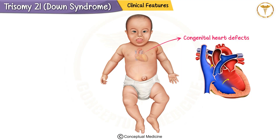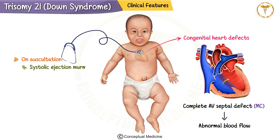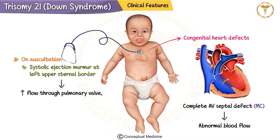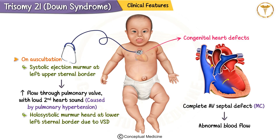Many children with Down syndrome are born with congenital heart defects, the most common being a complete atrioventricular septal defect, or AVSD. This is a complex defect where there are holes between the heart's chambers, leading to abnormal blood flow. Auscultation in these cases might reveal a systolic ejection murmur at the left upper sternal border due to increased blood flow through the pulmonary valve, along with a loud second heart sound caused by pulmonary hypertension.